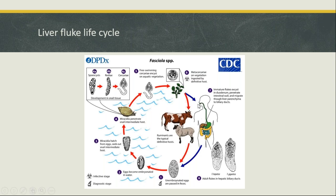Liver fluke are not specific to one host — they're not only a sheep or cattle parasite. Anything with a liver can be infected, and it's thought that up to 17 million people in the world are actually infected with liver fluke, so it's not just a livestock problem — it's a human health issue. In Australia, we only get Fasciola hepatica; luckily we don't get the larger, more pathogenic Asian species.